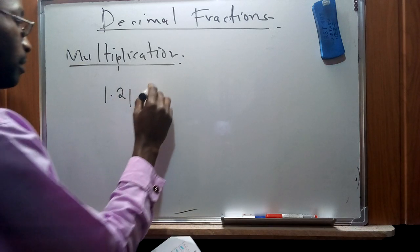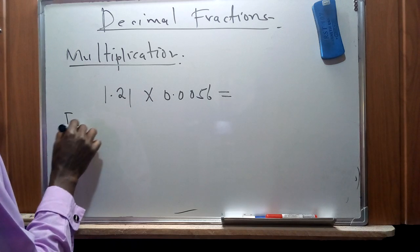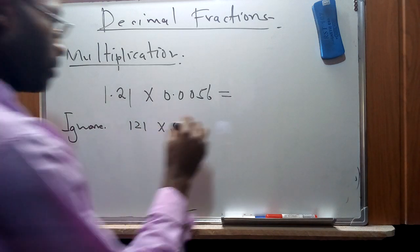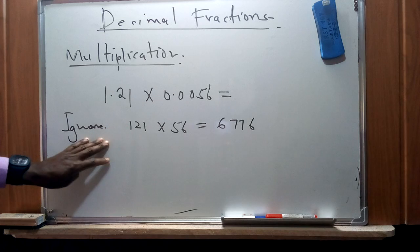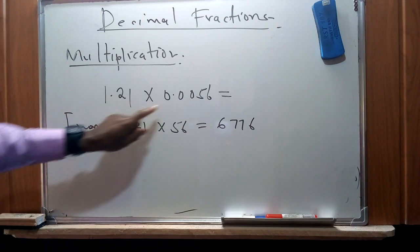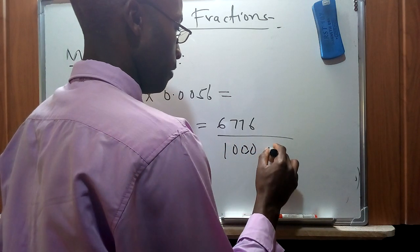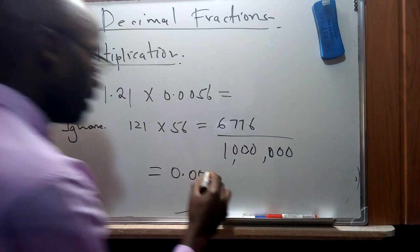For example, to find 1.21 × 0.0056: first we ignore the decimal places and compute 121 × 56 = 6776. Then we count the total decimal places: 1.21 has 2 decimal places and 0.0056 has 4 decimal places, giving a total of 6. Therefore, inserting 6 decimal places into 6776 gives us 0.006776.